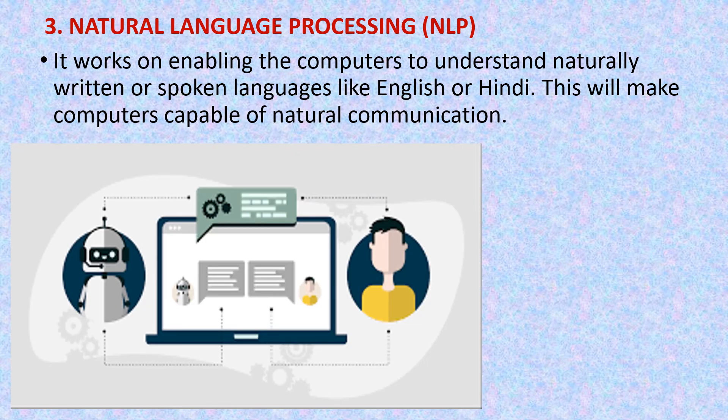The third domain of artificial intelligence is natural language processing, NLP. It works on enabling computers to understand naturally written or spoken languages like English or Hindi. It will make computers capable of natural communication. For example, if we are writing in English, the computer is automatically going to understand what we are asking for. There are many language inputs that can be chosen and on the basis of that we can give data. Whatever data we have given in the form of language, the machine processes that data and after processing gives some outputs.